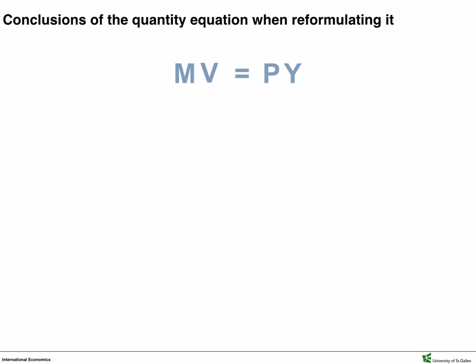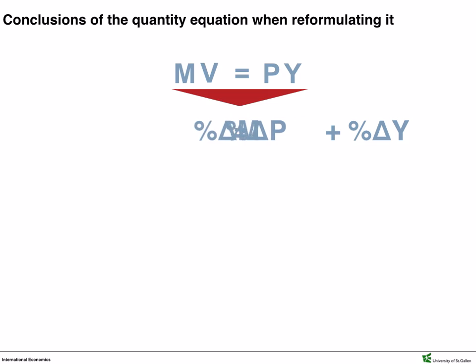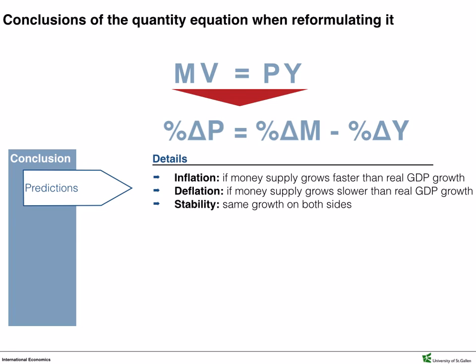Now let's tweak this equation a little bit and rewrite the equation. We can now see that the growth rate of money supply plus the growth of velocity must equal the growth of price levels plus growth of quantity output from one period to the next. Irving Fisher argued that the velocity of money is constant over time, meaning there won't be any growth, so we can take it out of the equation. We know that another expression for the growth of P is inflation, and solving for inflation: the inflation rate equals the growth rate of the money supply minus the growth rate of real output. Hence, if money supply grows faster than real GDP growth, we end up with inflation, and the exact opposite situation results in deflation.